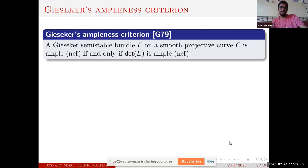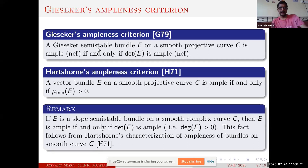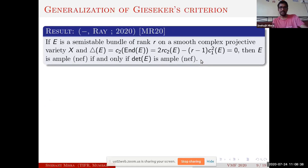Gieseker's ampleness criterion says that if we start with a semi-stable bundle on a smooth projective curve, then it is ample or nef if and only if the corresponding determinant bundle is ample or nef. Hartshorne proved earlier that a vector bundle E on a smooth projective curve is ample if and only if mu_min(E) is positive. So ampleness can be read off just by looking at the Harder-Narasimhan filtration. Gieseker's ampleness criterion can be seen as a special case of Hartshorne's.